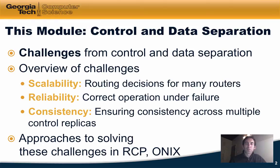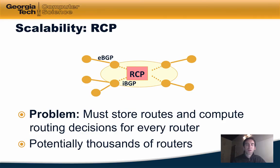Let's first take a look at some of the scalability challenges faced by the Routing Control Platform. The RCP must store routes and compute routing decisions for every router across the autonomous system, and a single autonomous system may have hundreds to thousands of routers. That's potentially many routing tables and a lot of routing computations all being performed at a single node, whereas before all those computations were distributed across the routers themselves.